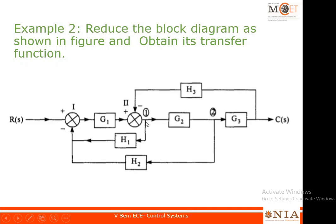We have three feedbacks: h1, h2, and h3. From here a signal is tapped and given to the input. From the second point you tap the signal and give it through h2 as feedback. This is one feedback loop with h1 as negative feedback, and here you have another feedback loop as well.